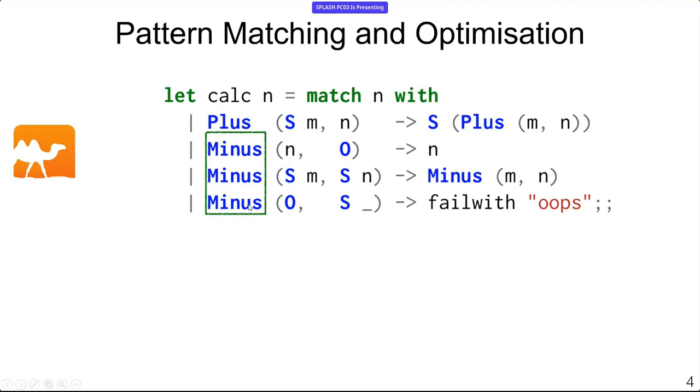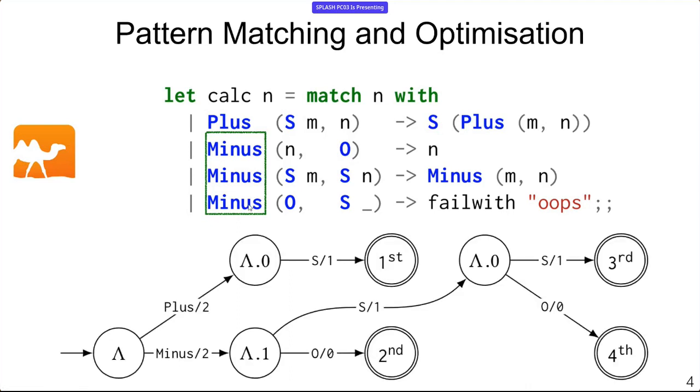The way that we can represent this is by a matching automaton, where the lambda in the automaton is the root of the tree. At the root of the tree, we inspect the constructor, see if it's a plus or a minus. If it's a minus, we look at the second child, we're zero indexing here, and if that second child is an O, then we are in the second case of our case expression. If instead it's an S, then we need to inspect the first child as well to find out if we're in the third or the fourth branch. This is the typical way that's existed for a long time already to do optimization of case expressions.